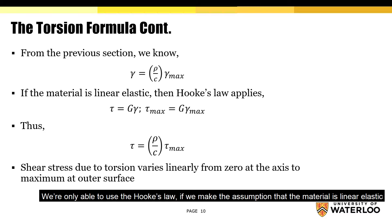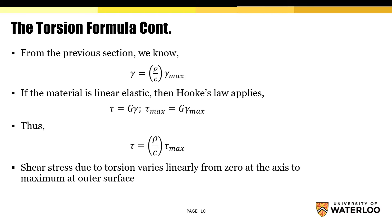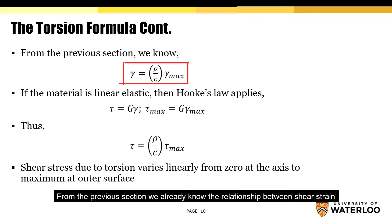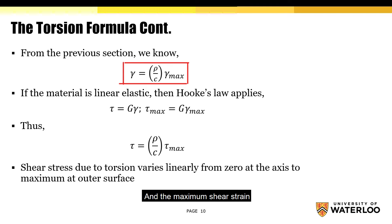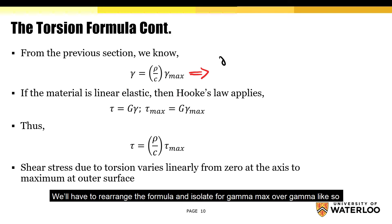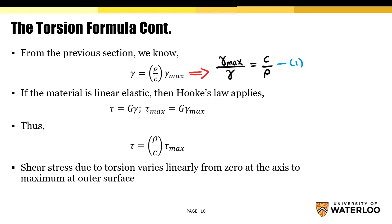We're only able to use Hooke's Law if we make the assumption that the material is linear elastic. From the previous section, we already know the relationship between shear strain and the maximum shear strain. If you want to use this equation, we'll have to rearrange the formula and isolate for gamma max over gamma like so. We'll label this equation as equation 1.